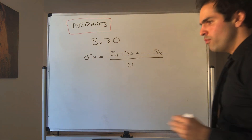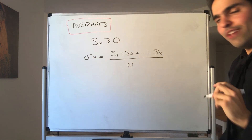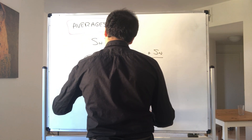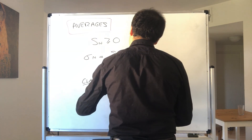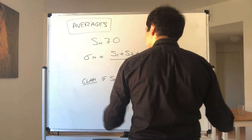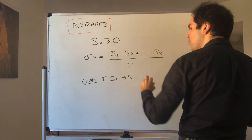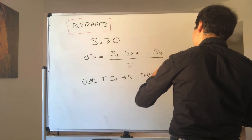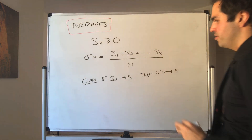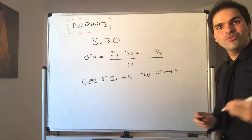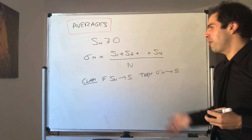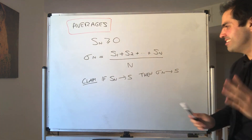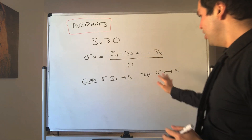then what we can show is that if the sequence converges — so claim: if Sn converges to S, then the sequence of averages also converges. It sounds like almost a weak law of large numbers in probability, and I also think it's very important in harmonic analysis. So that's all I know.